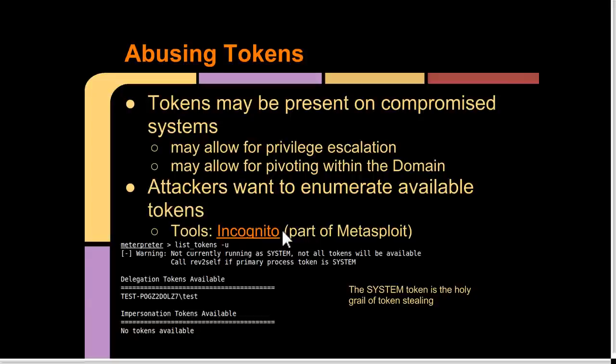Let's talk about abusing tokens. If you compromise a system, all running processes have these access tokens stored in process memory. If you have access to read that process and it has a system token, and you have access to open that token, you could steal it and use it to impersonate SYSTEM—escalating privileges from whatever process you're currently running as. The first thing attackers want to do when they get access is to enumerate the available tokens. In Linux you want to enumerate user accounts and see which ones are loginable as potential vectors to gain more access.